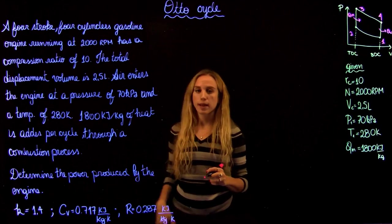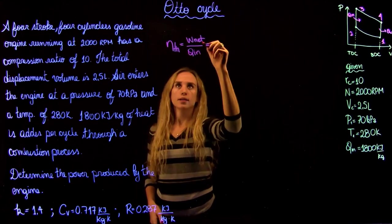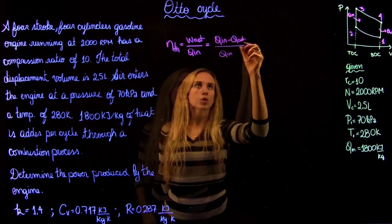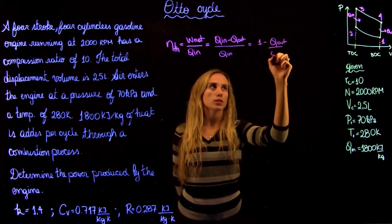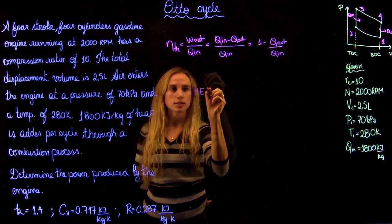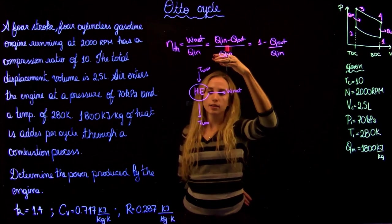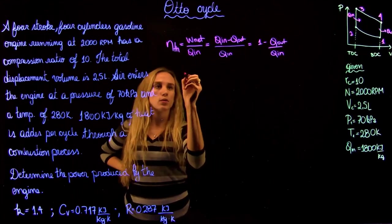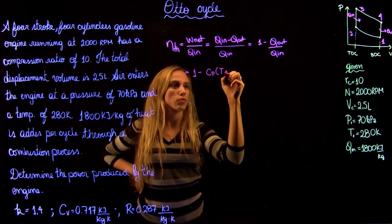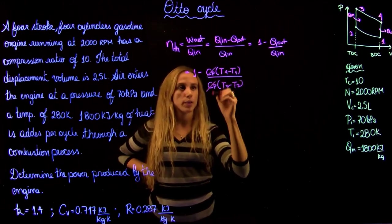To find the power produced by the engine, let's start with the thermal efficiency, which is the net work over Q in. For an engine, the net work is Q in minus Q out over Q in, which we can rewrite as 1 minus Q out over Q in. Expanding this using specific heats, it becomes 1 minus Cp(T4 minus T1) over Cp(T3 minus T2), where the Cp terms cancel out.